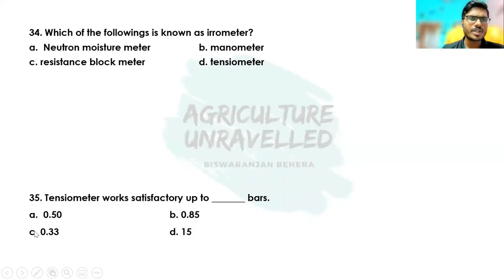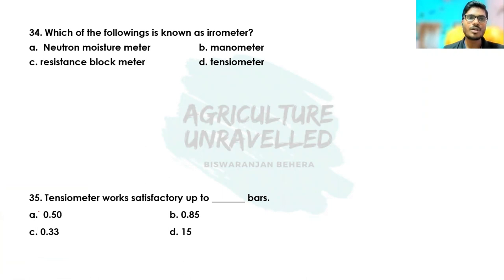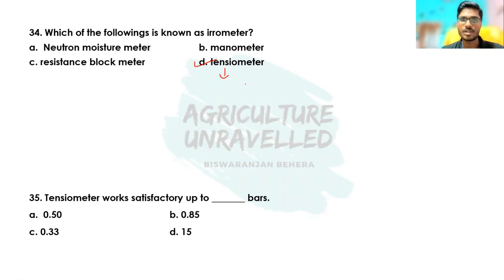Coming to the next question: which of the following is known as Irrometer? The correct answer is the tensiometer, also known as Irrometer, because tensiometer is widely used to schedule irrigation. Tensiometer is an instrument used to measure soil water potential or soil water tension.